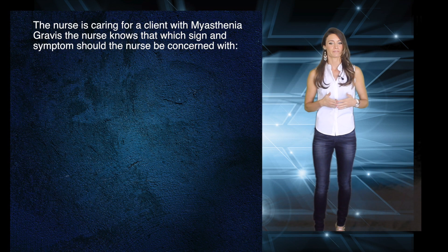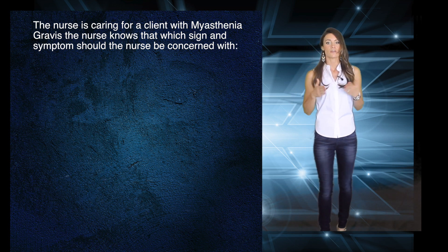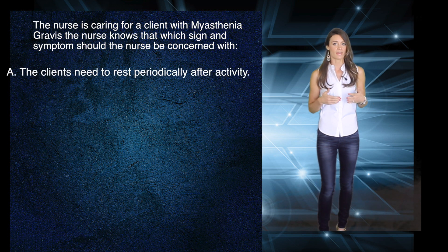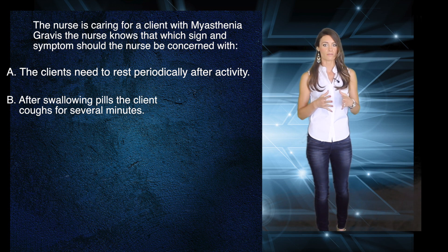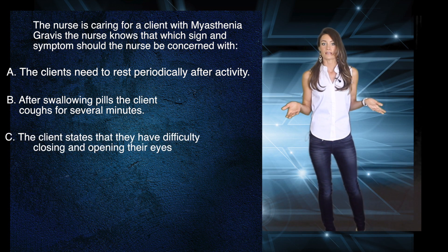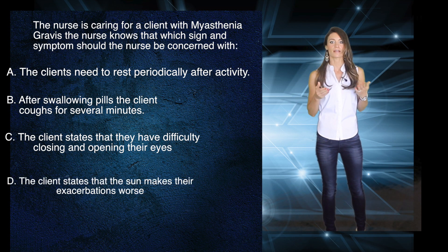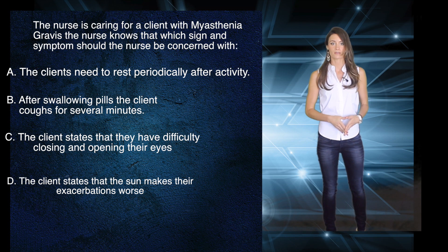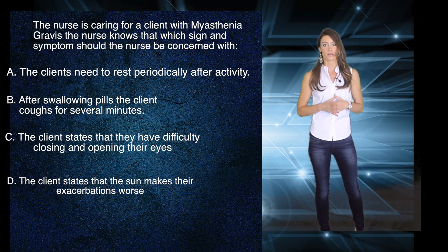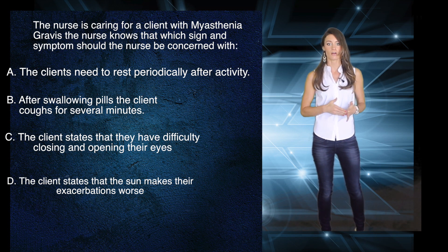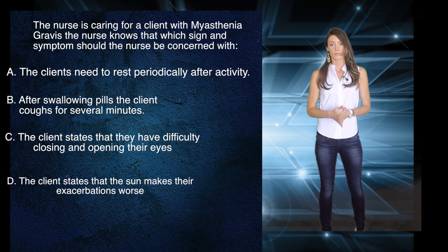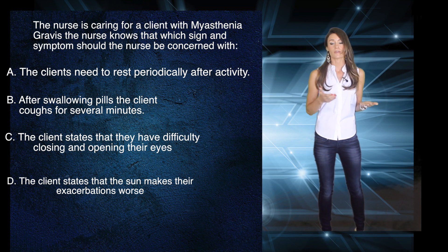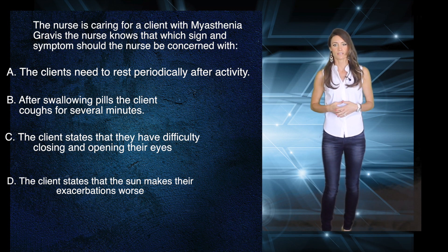Now let's look at some NCLEX style questions. The nurse is caring for a client with myasthenia gravis. Which sign and symptom should the nurse be most concerned with? A) The client needs periodic rest after activity. B) After swallowing pills, the client coughs for several minutes. C) The client states they have difficulty closing and opening their eyes. Or D) The client states that the sun makes their exacerbations worse. A major complication with myasthenia gravis is respiratory distress, chewing and swallowing difficulties, and food aspiration — all of which could lead to severe respiratory distress and pneumonia. Coughing after swallowing pills is a sign of aspiration, so the answer is B. The other options are expected with this disease process.